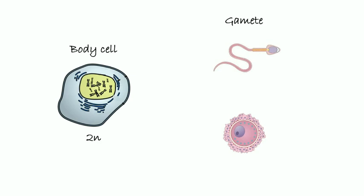So, the body cell contains 23 pairs of chromosomes. It is called diploid cell, or 2N. Gamete contains 23 chromosomes. It is called haploid cell, or N.